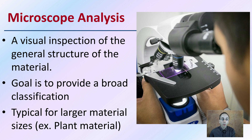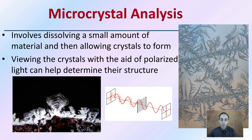Looking at microscopic analysis: this is a visual inspection of the general structure of the material. The goal is to provide a broad classification. It's typically used for larger materials such as plant material, since it's not great at getting at molecular structures — just what the material looks like under high-power magnification. That can lead us to microcrystal analysis, which involves dissolving a small amount of material and then allowing crystals to form. Viewing the crystals with polarized light can help determine their structure and classify the material.